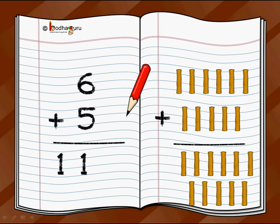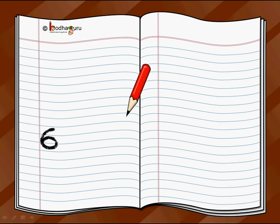So as we saw in the addition video previously, addition is all about you have some things and you got some more things. Your total is this many sticks plus this many sticks. You can write it as six plus five is equal to eleven.